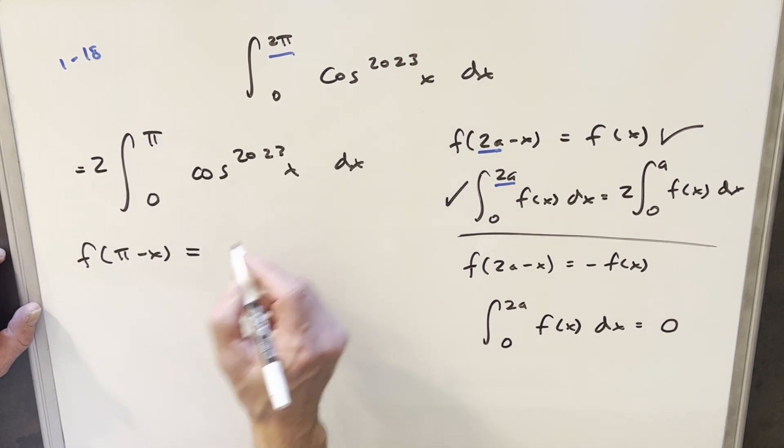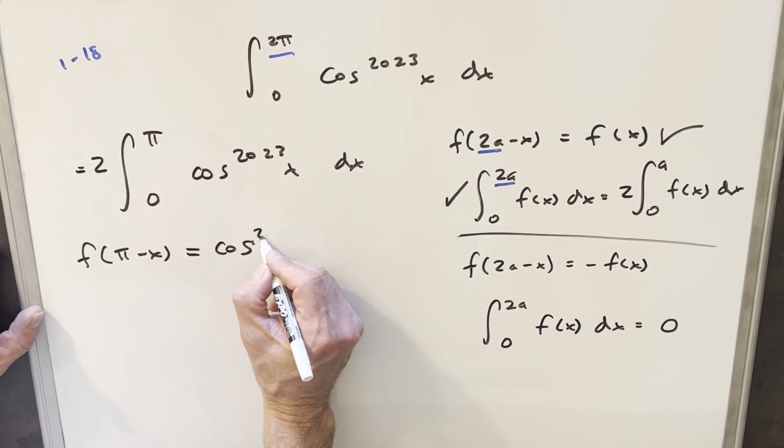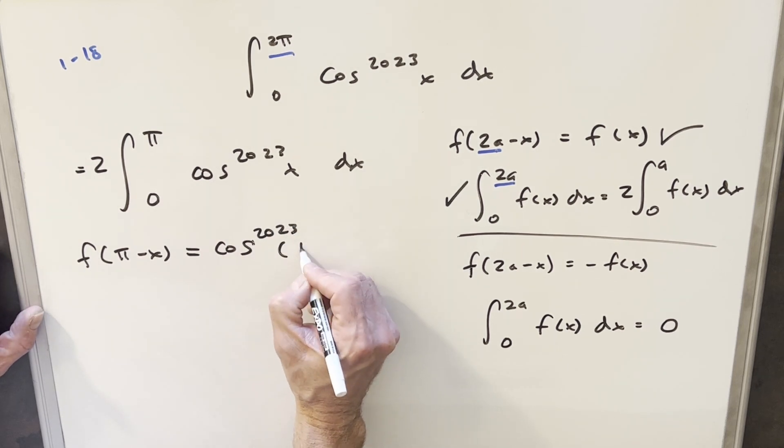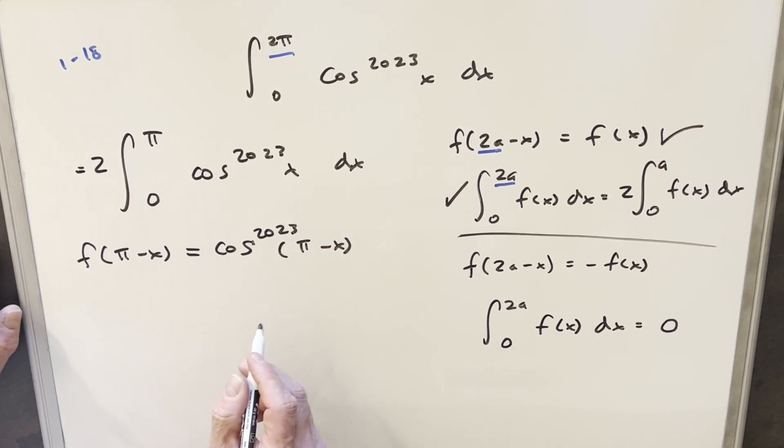So, we're checking, going back to our function, or actually our function here, but it's the same thing. So, we're checking 2023 to π minus x, but notice cosine of π minus x, this is just our supplementary angle formula. So, this is the same thing as minus cosine of x.